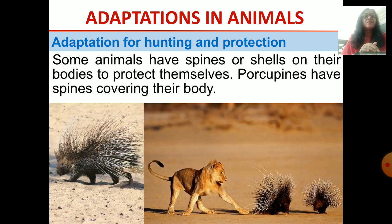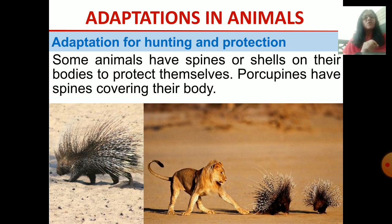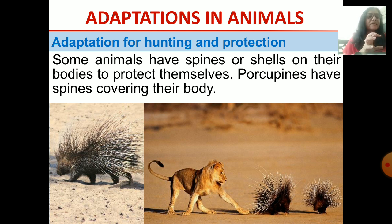Here is another type of adaptation — not camouflage. Some animals have spines or shells on their body to protect themselves. The example is porcupine. You can see in the picture that porcupines have spines covering their body. In another picture you can see a lion, and because the porcupine has spines, even the lion is not able to catch it. This is how it protects itself from the hunter animal.